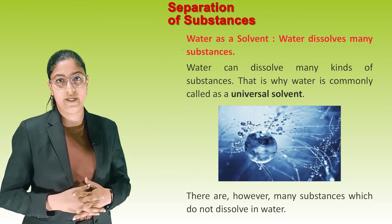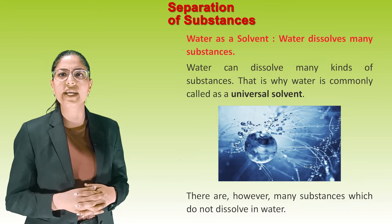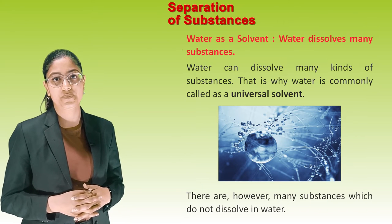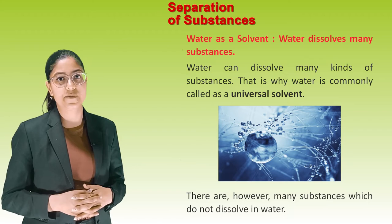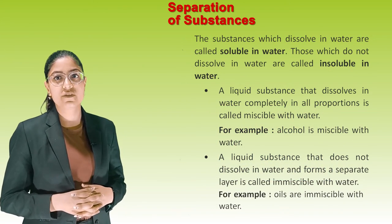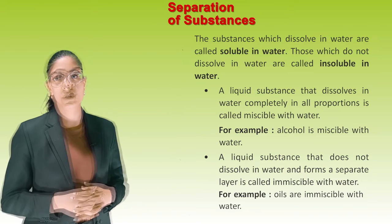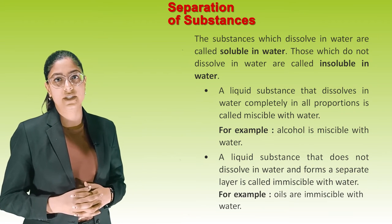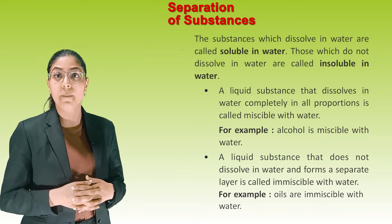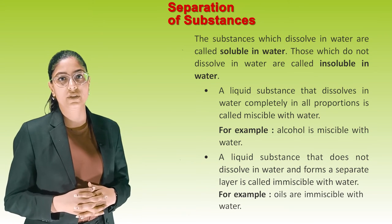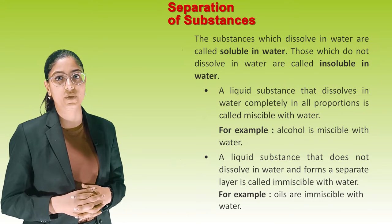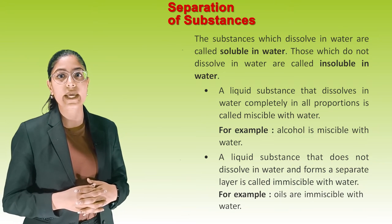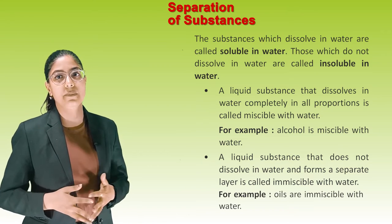Water as a solvent: Water dissolves many substances, which is why it is commonly called a universal solvent. However, many substances do not dissolve in water. Substances which dissolve in water are called soluble in water, and those which do not are called insoluble in water. A liquid substance that dissolves in water completely in all proportions is called miscible with water — for example, alcohol. A liquid substance that does not dissolve in water and forms a separate layer is called immiscible with water — for example, oils.